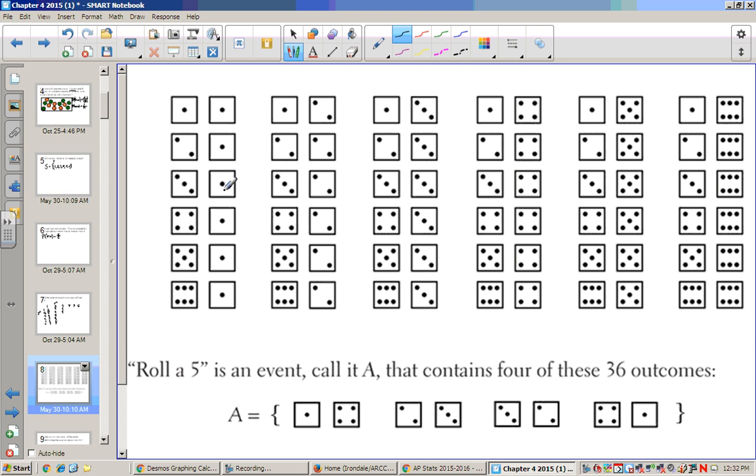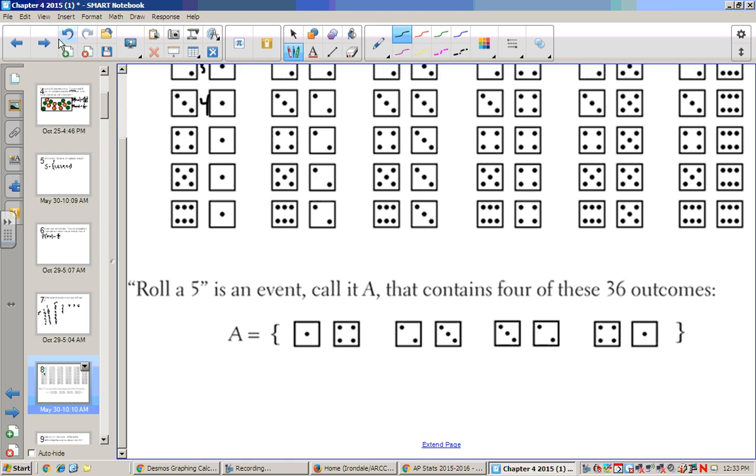And so you can have a sample space of 36 different outcomes. Each of these we call an outcome, 1 and 1, 2 and 1. And we could put the sum in the middle if you wanted. So there's 36 outcomes. Each event, like if I said, roll a 5, how many times could the sum be 5? You get 1 and 4, 2 and 3, 3 and 2, and 4 and 1.